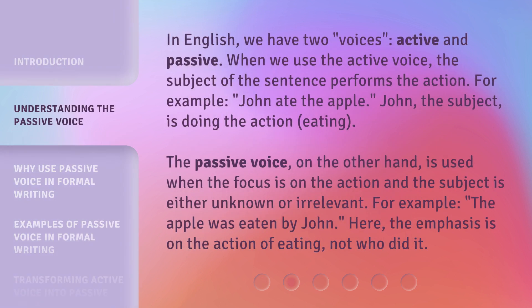In English, we have two voices: active and passive. When we use the active voice, the subject of the sentence performs the action. For example, 'John ate the apple.' John, the subject, is doing the action, eating. The passive voice, on the other hand, is used when the focus is on the action and the subject is either unknown or irrelevant. For example, 'The apple was eaten by John.' Here, the emphasis is on the action of eating, not who did it.